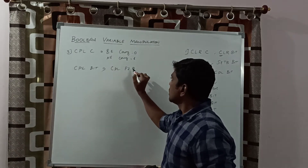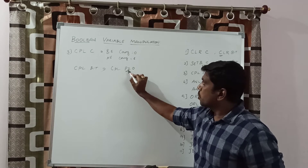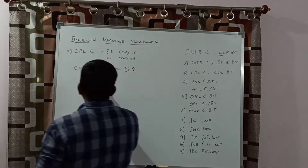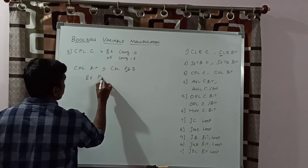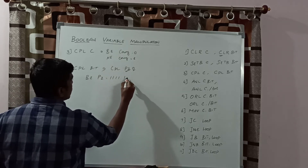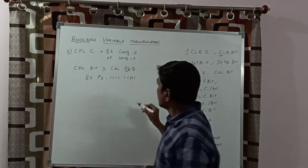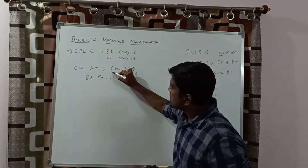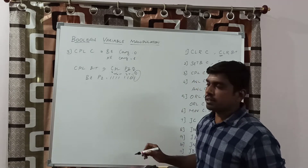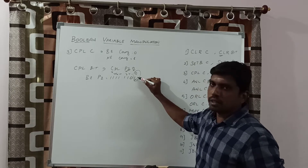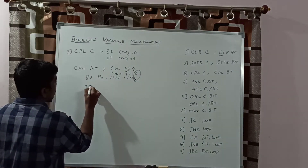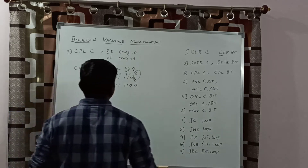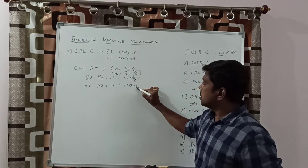One more instruction in this group is CPL bit, for example CPL P2.0, which considers port 2's 0th bit. Whatever value is present in the 0th bit is complemented. Before execution, port 2 value is assigned 1111 1010 (bits numbered LSB 0 through 7). You take the 0th bit's complement. After execution, the P2 value becomes 1111 1100 — that 0th bit goes from 1 to 0.